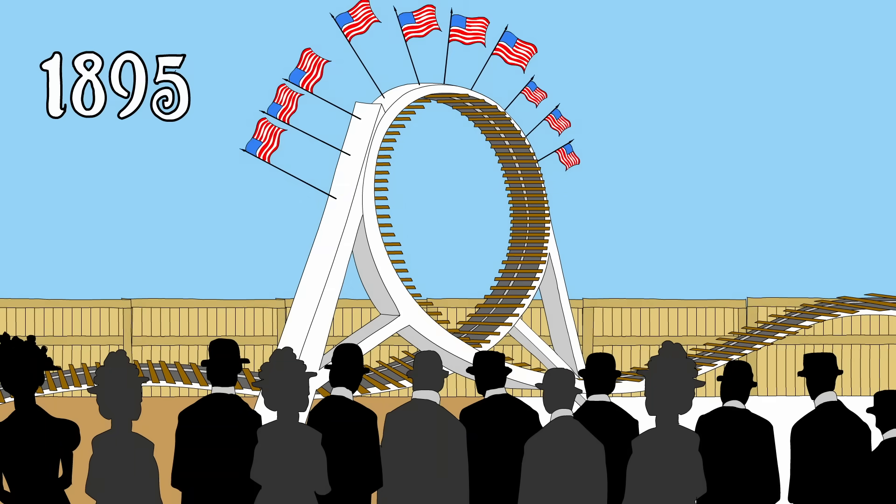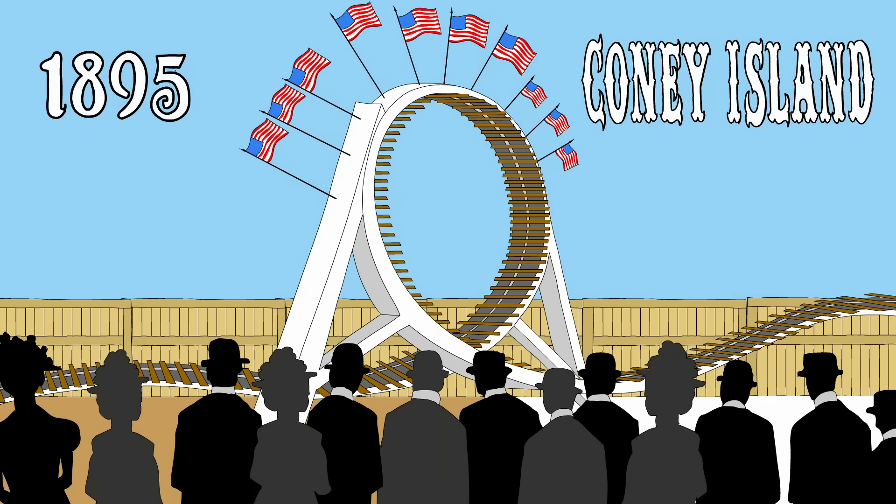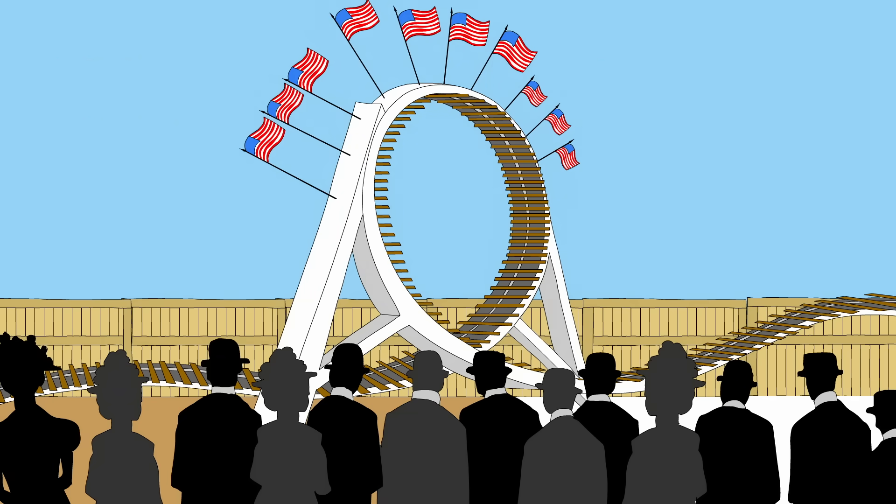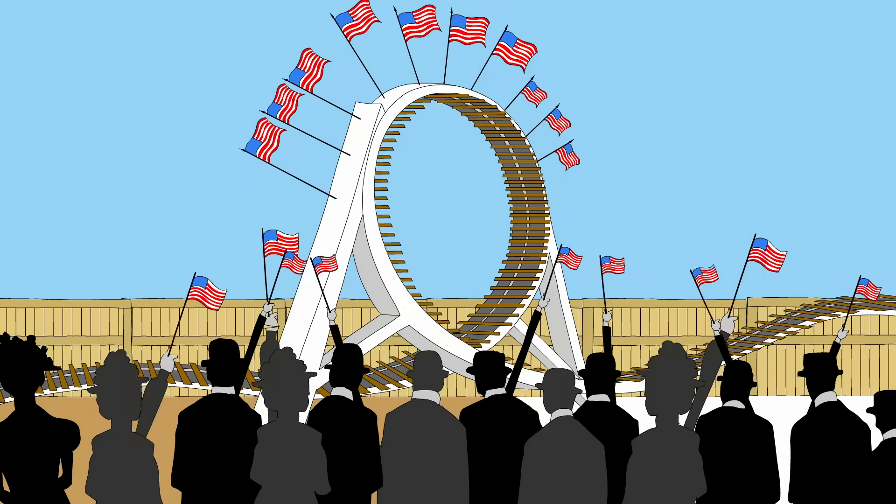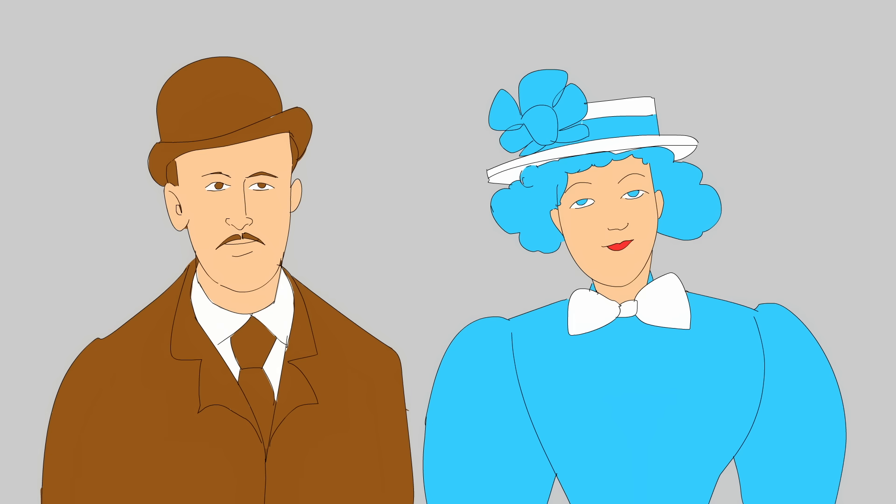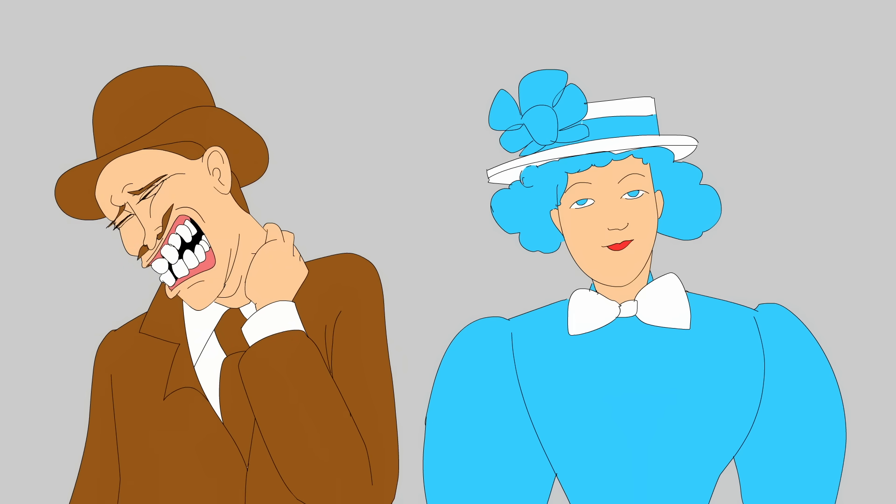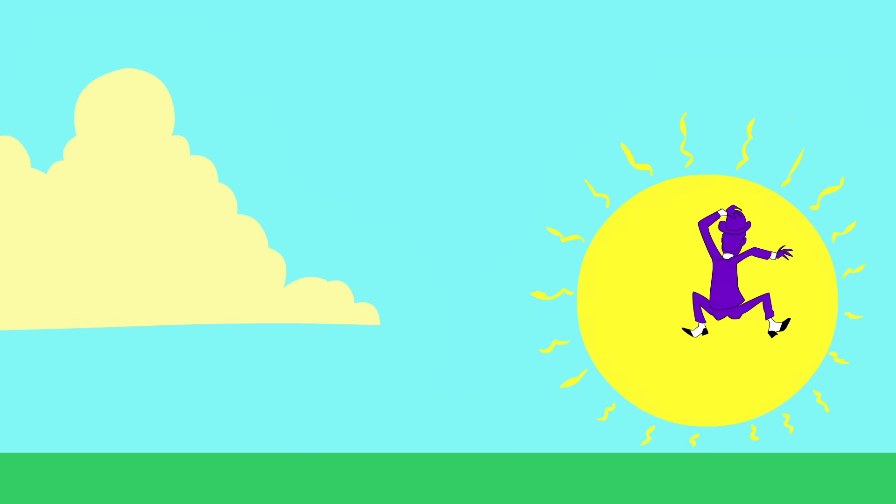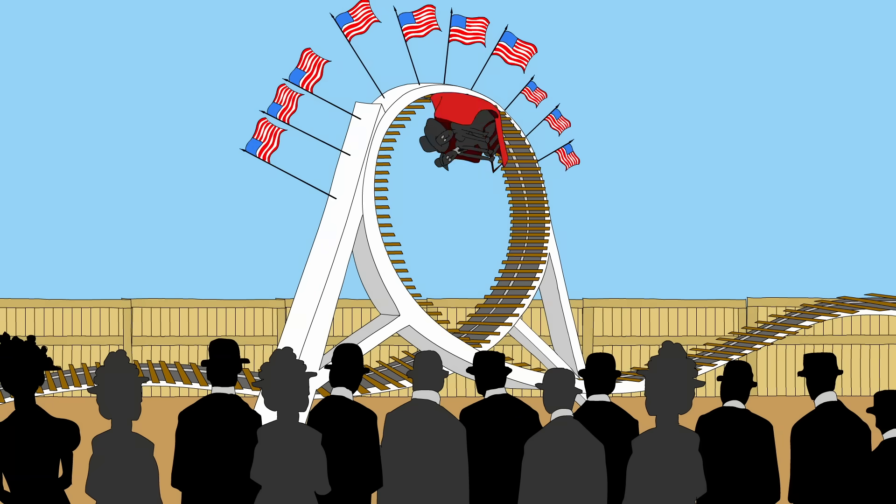In the summer of 1895, crowds flooded the Coney Island boardwalk to see the latest marvel of roller coaster technology—the Flip Flap Railway. This was America's first-ever looping coaster, but its thrilling flip came at a price. The ride caused numerous cases of severe whiplash, neck injury, and even ejections—all due to its signature loop.